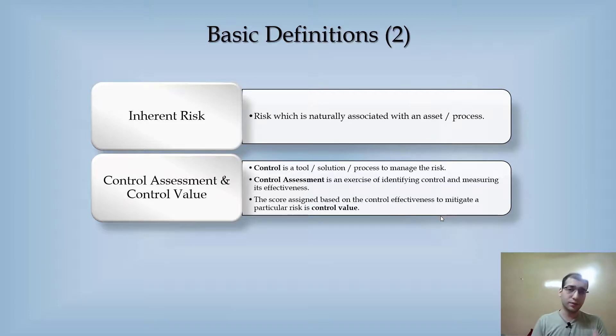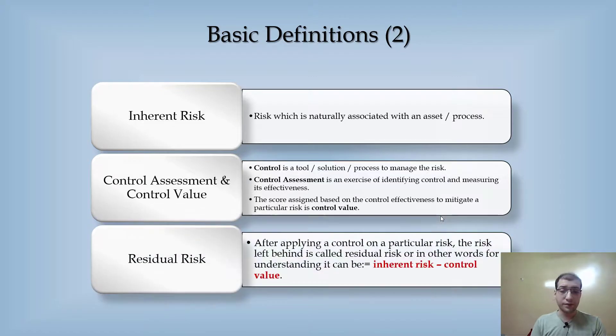Residual risk: once you apply the control on the risk, the risk left behind is called residual risk. That residual risk can never be null or zero; it will always be there but in a reduced amount. As per the definition, after applying a control on a particular risk, the risk left behind is called residual risk, or in other words, it can be understood as inherent risk minus the control value.